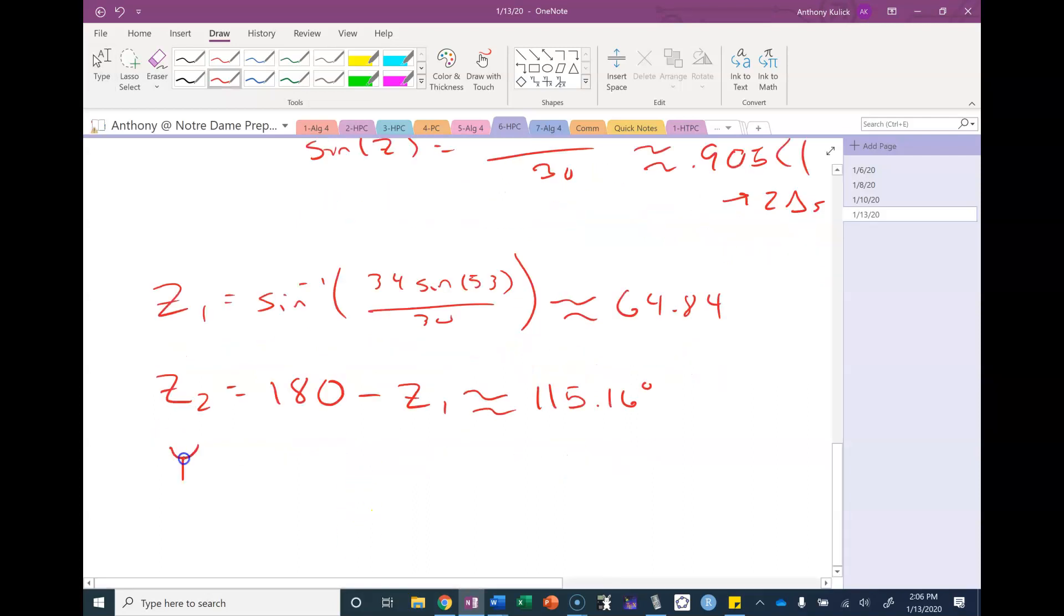To find angle y1, I'm going to use the triangle sum theorem. So I'll do 180 minus x minus z1. When I do that, I get 62.16. To find angle y2, I'm going to do the same thing, except I'm going to be using z2. And that's how I get the 11.84.